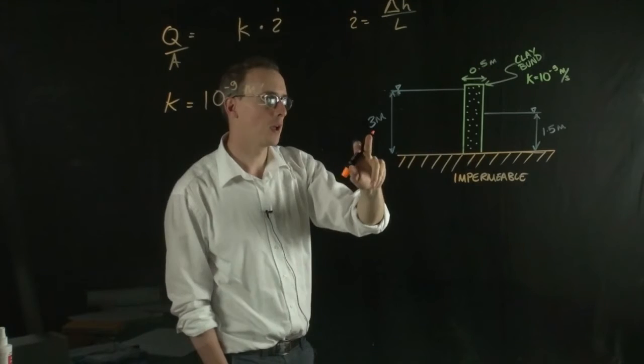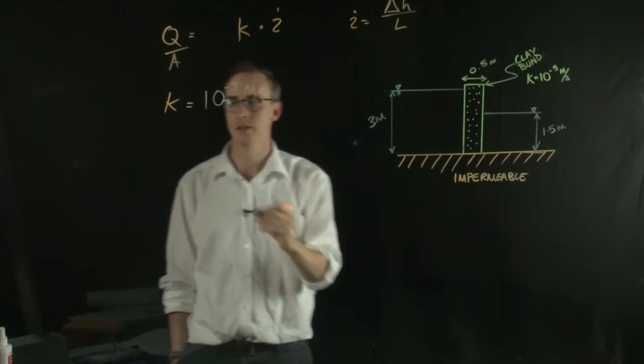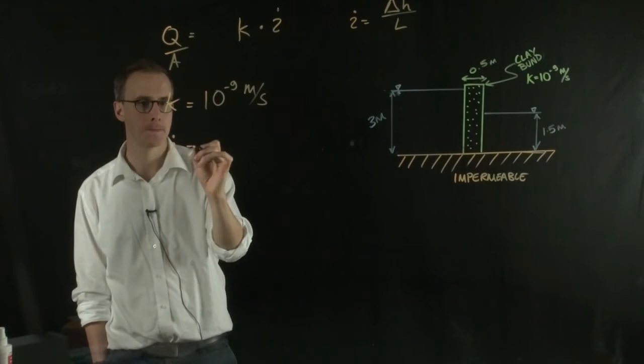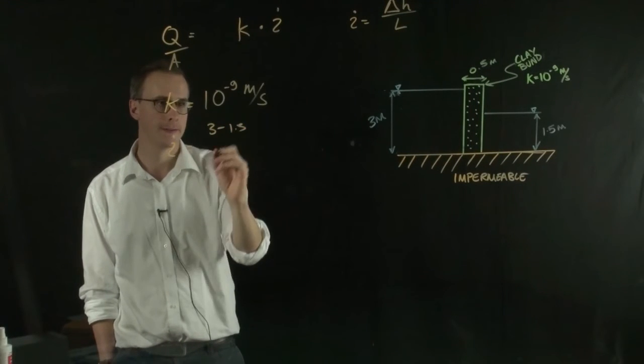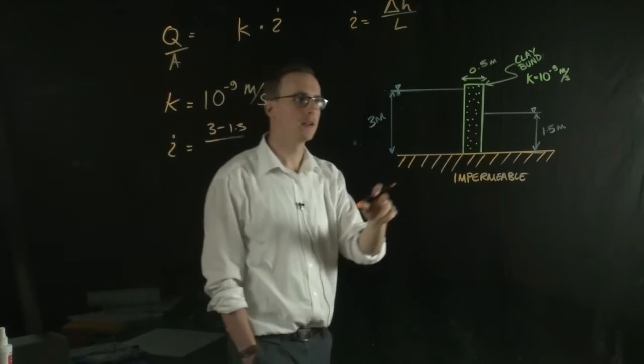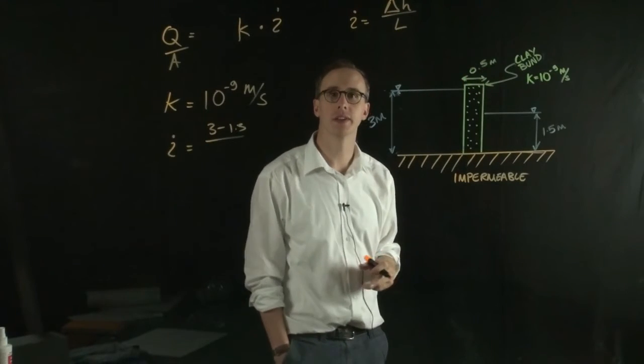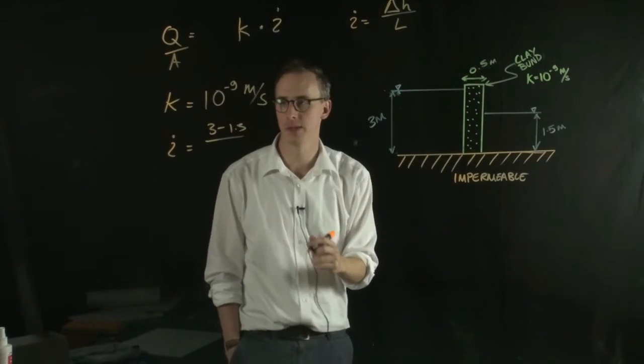So the change in height is 3 metres minus 1.5, divided by the length of flow, which is the thickness of the bund, 0.5 metres.